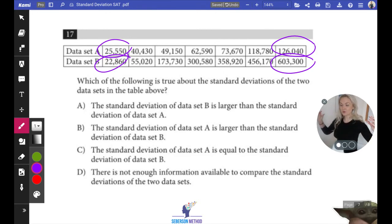So data set A is going to be a lot more squished together compared to data set B. If the data is squished together, the standard deviation is lower. Low standard deviation is good.